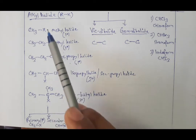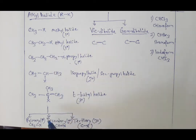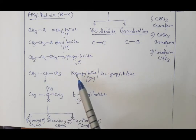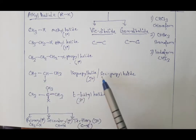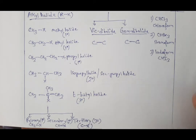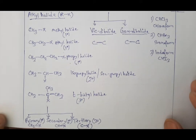To summarize: in monohalo hydrocarbon (alkyl halide), C bonded to halogen is tertiary (3°), CH is secondary (2°), and CH2 is primary (1°). Primary examples are methyl, ethyl, and propyl halide. Secondary example is isopropyl or sec-propyl halide, where sec means secondary. Tertiary example is t-butyl halide, where t stands for tertiary. This completes the classification of alkyl halide.